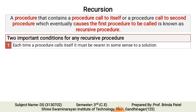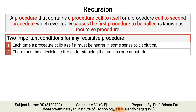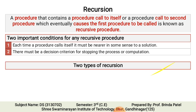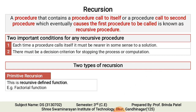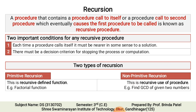The entire process is called recursion. There are two important conditions for any recursive procedure. First, each time a procedure calls itself it must be nearer in some sense to a solution. There must be a decision criterion for stopping the process. There are two types: primitive recursion — for example factorial function — and non-primitive recursion, for example finding GCD of two numbers.